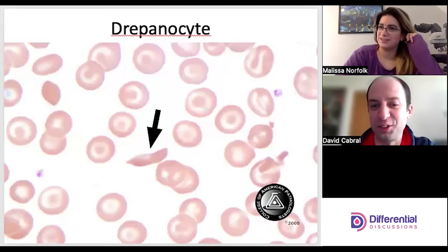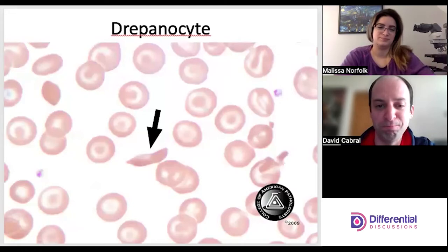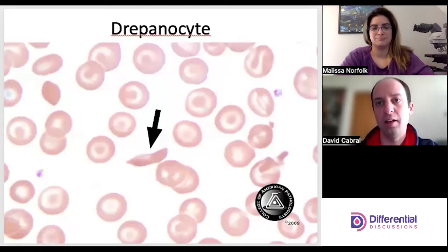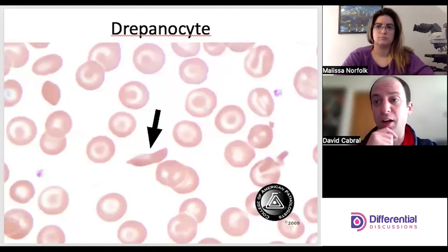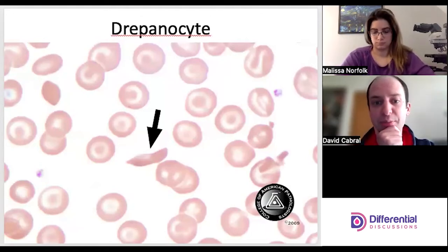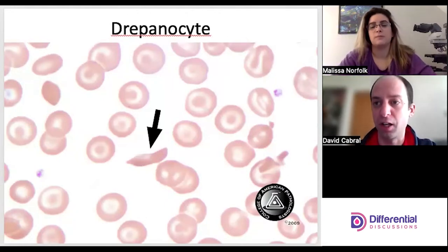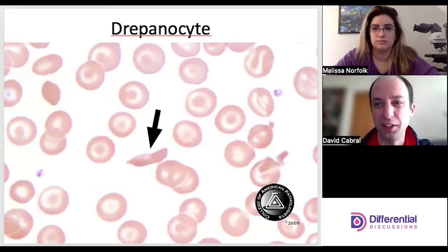Drepanocytes — our beloved sickle cells. They can range from a bit elliptic to full-on sickle shapes. Most of the time they'll have a deep red coloration due to the dehydrating nature of the physiology going on in the cell, which really concentrates the hemoglobin.